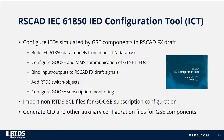The ICT can add RTDS switch objects to simulate switchgear operations and supports configuring GOOSE subscription monitoring — the ELGOS feature. The ICT can import non-RTDS SCL files — ICD, CID, and SCD files — necessary for GOOSE subscription configuration. Finally, the ICT can generate CID and other auxiliary configuration files for GSE V7 components.